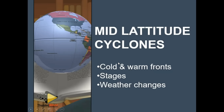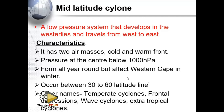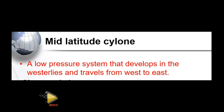When talking about mid-latitude cyclones, the first thing that should come to mind is the cold front and the warm front. We are going to look at the stages and the weather changes that exist because of the cold front. A mid-latitude cyclone is a low pressure system that develops in the westerlies.